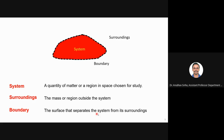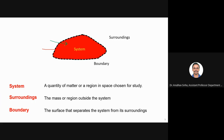The boundary is the surface that separates the system from its surrounding. We identify a mass or region in space and say that this is the system. Then whatever mass transfer or heat transfer we need to talk about, we discuss in terms of this boundary. For example, some mass is entering the system through the boundary, or some heat is leaving the system through the boundary.